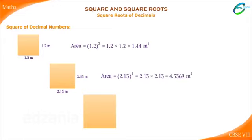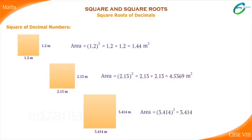Similarly, we have another square-shaped land whose side is 3.414 meters. What would be the area? Area is equal to 3.414 the whole square, that is equal to 3.414 into 3.414, which is equal to 11.655396 meter square.